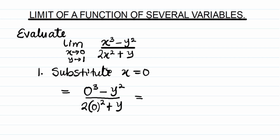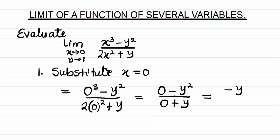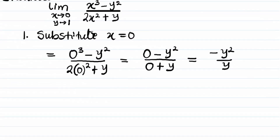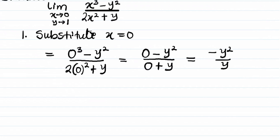This is equal to 0 cubed, which is 0, minus y squared, all over 2 times 0 squared gives you 0, plus y. So I have minus y squared all over y. At this point, my next step is to bring in the second limit, where y approaches 1.